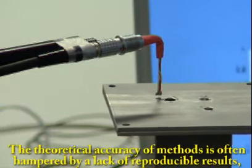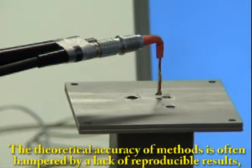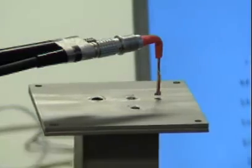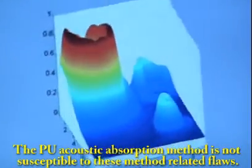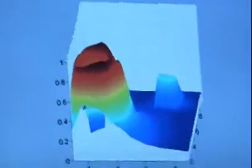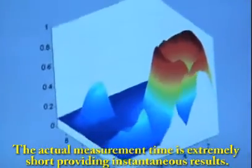The theoretical accuracy of methods is often hampered by the lack of reproducible results. The PU acoustic absorption method is not susceptible to these methods related flaws. The actual measurement time is extremely short providing instantaneous results.